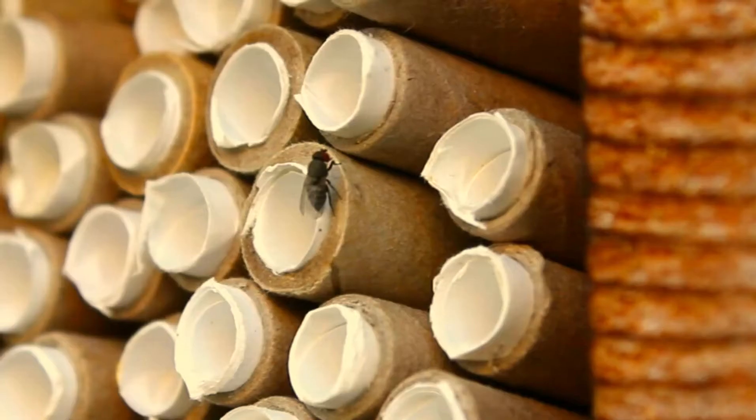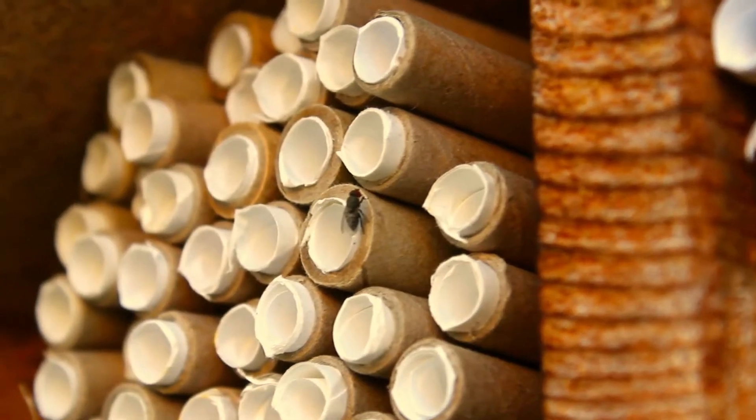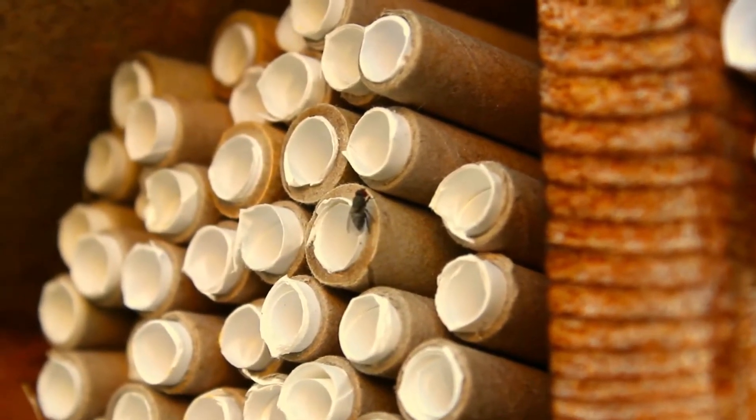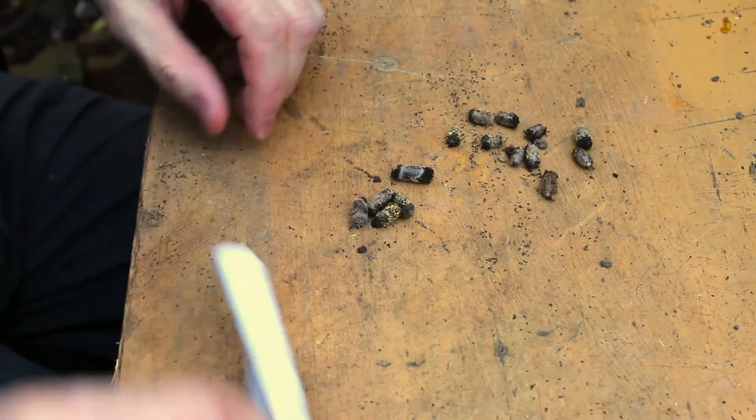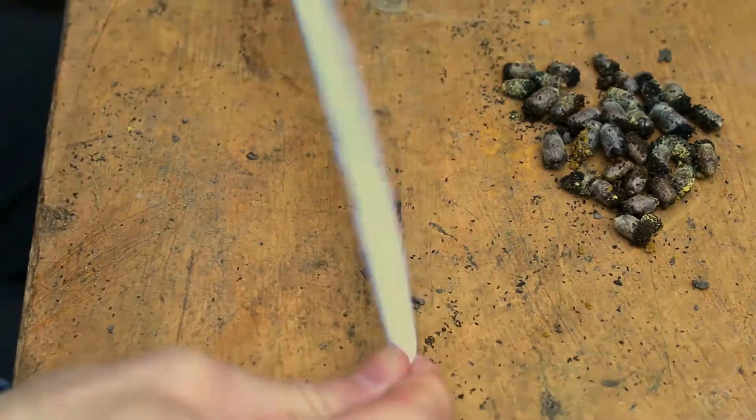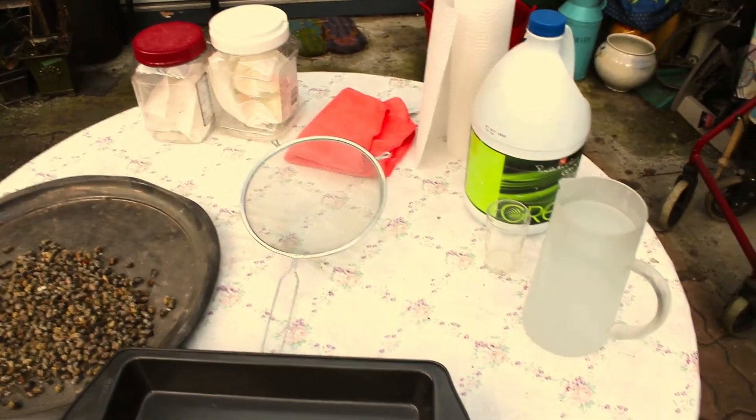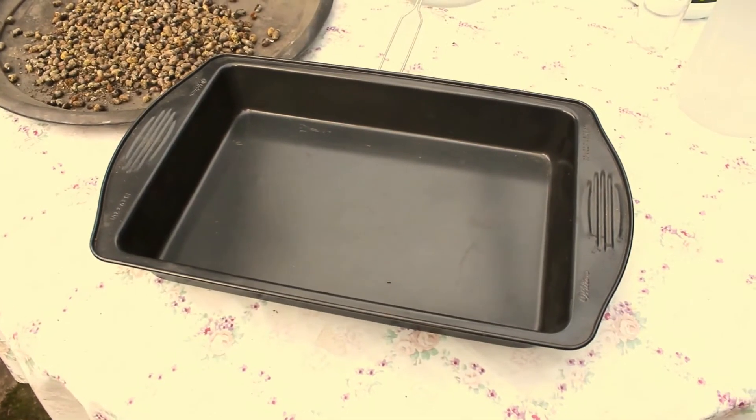Another common pest is the houdini fly. It will lay its eggs directly on the pollen bundle and when they develop, the fly maggots will eat all the pollen. It's important to watch for houdini flies throughout the season and kill them immediately when spotted.